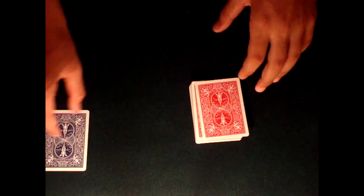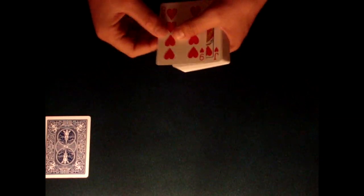I'm going to set this to the side. Now what I'm going to do is get a spectator to name a random number between 10 and 20. Since I don't have one, I'm just going to say ten.